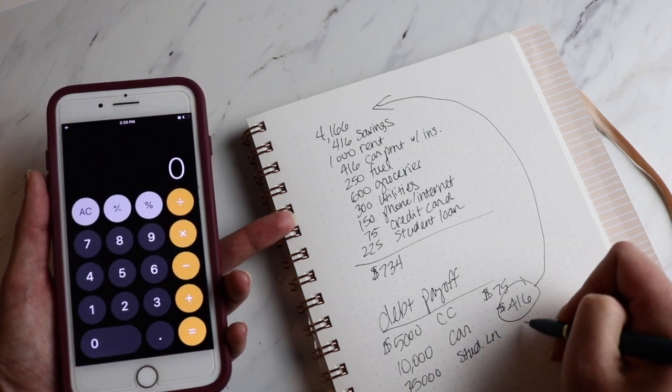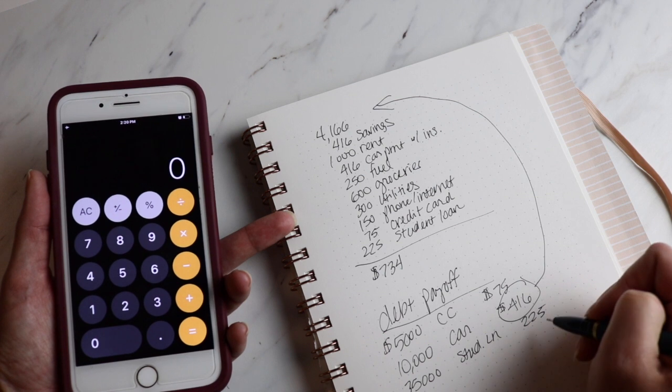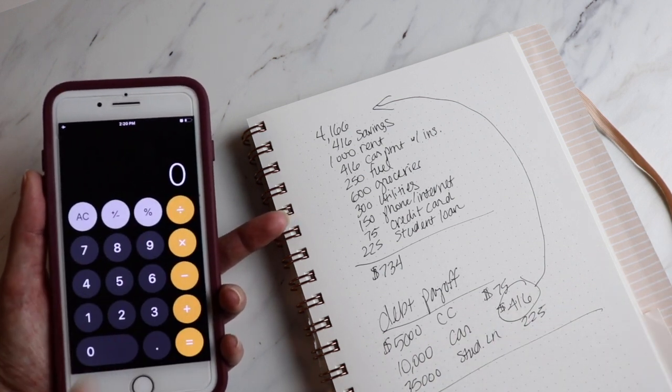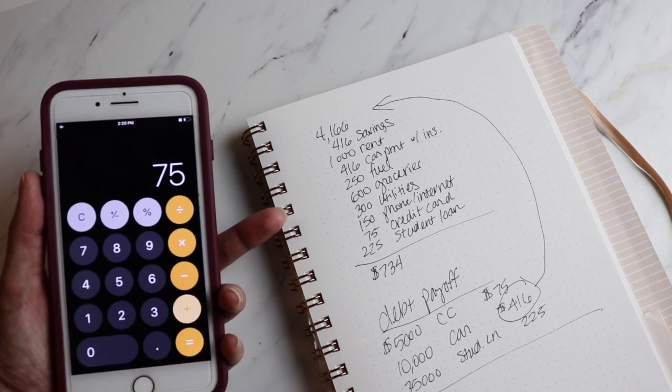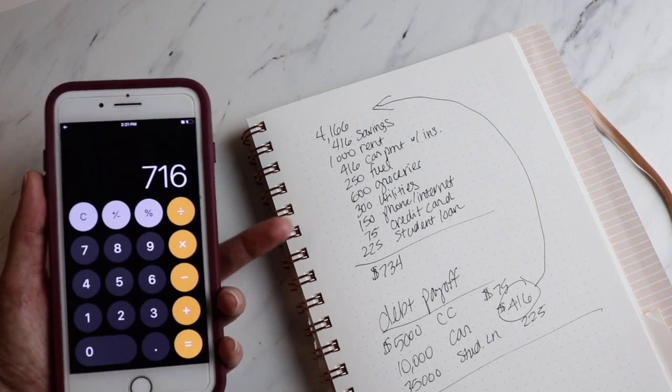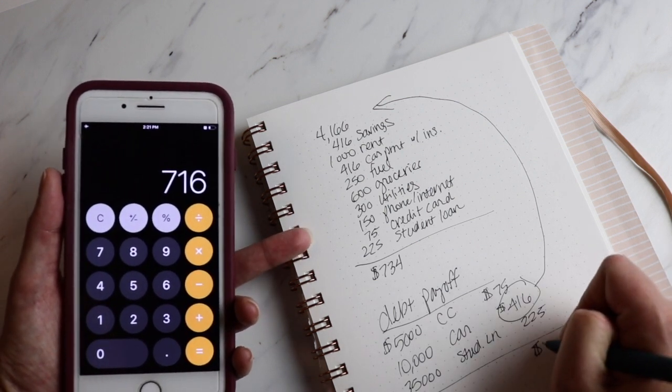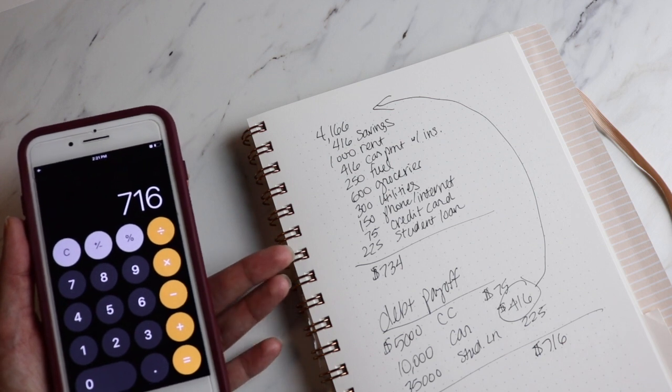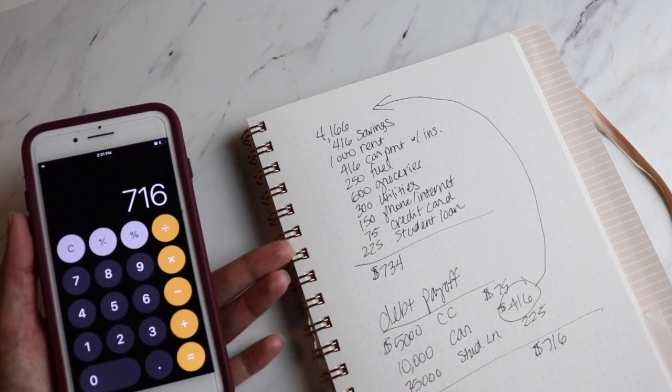And then let's say your student loan, you owe $35,000 and your payment was $225. Now, it looks like $716 per month is going towards your debt payments, if I can calculate correctly. That's right, $716.